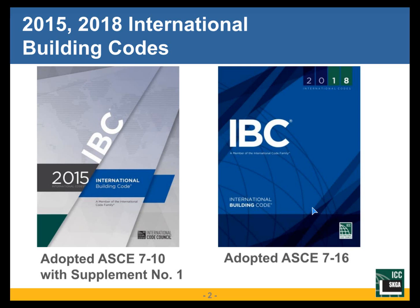Major changes in Chapter 16 are now encountered only when the referenced edition of ASCE 7 changes. That happened when the 2018 IBC came out — it referenced ASCE 7-16, whereas the prior 2015 IBC referenced ASCE 7-10 including Supplement Number One. So essentially we went from ASCE 7-10 to 7-16, and all the changes made in ASCE 7-16 were carried over into Chapter 16 of the 2018 IBC.